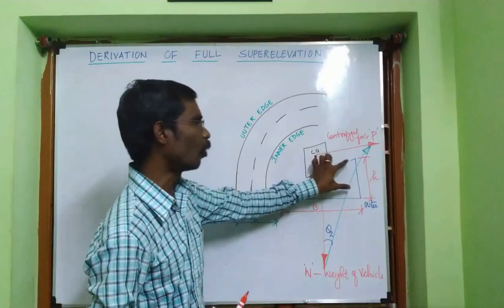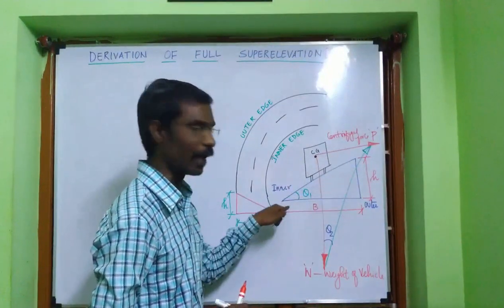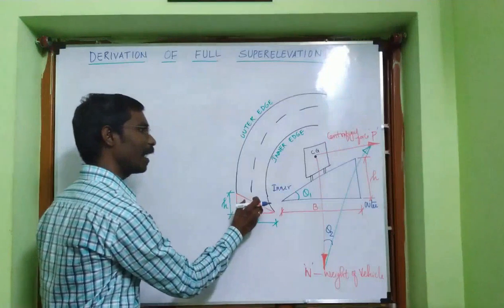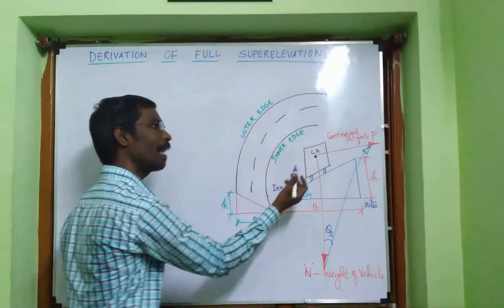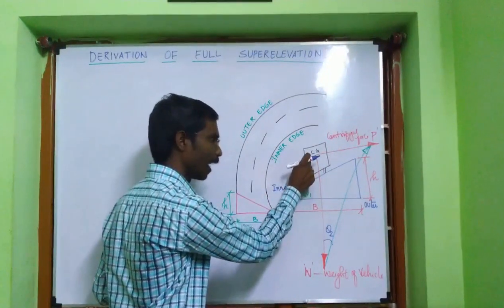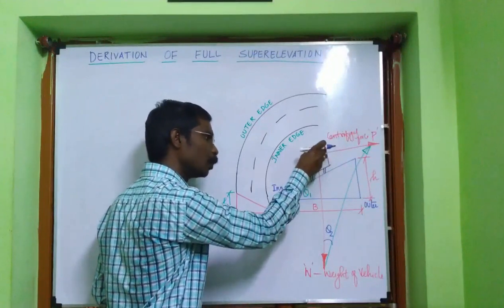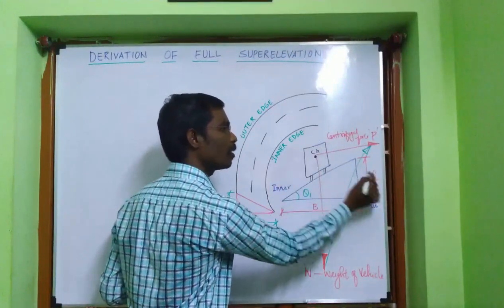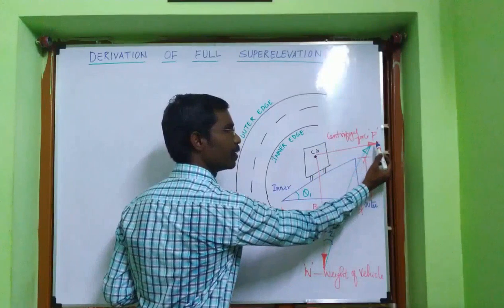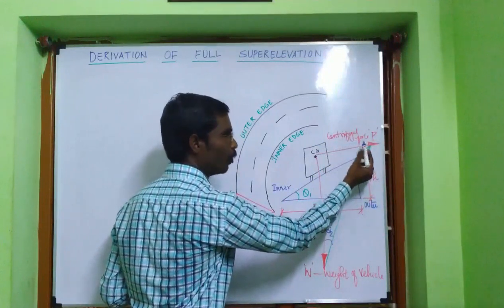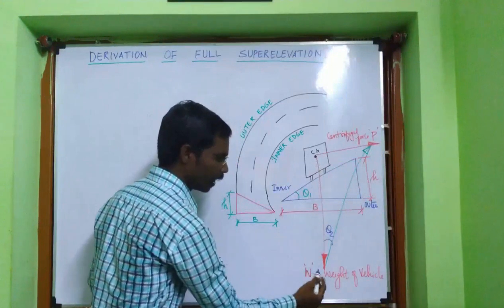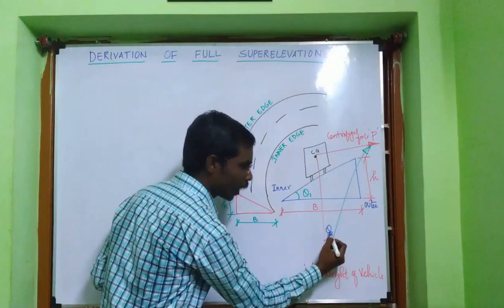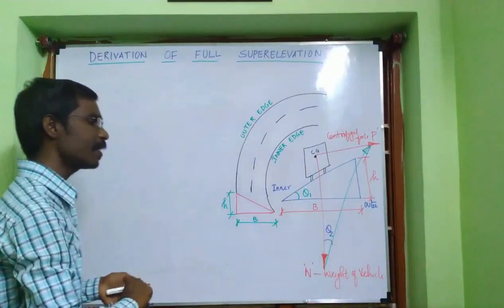The rise of the outer edge to the inner edge forms a triangle, and this triangle gives angle theta 1. When the vehicle travels in a horizontal curve, it has a center of gravity (CG). The weight of the vehicle acts downward, denoted as W. The centrifugal force acts towards the outer edge of the pavement, denoted as P. The centrifugal force P and the weight W also form a triangle, giving angle theta 2.